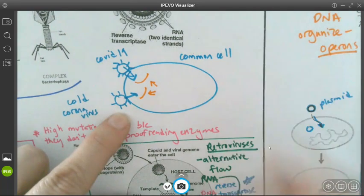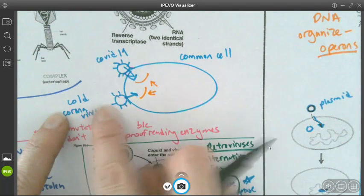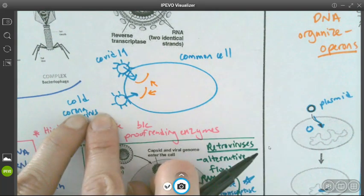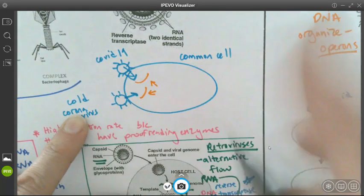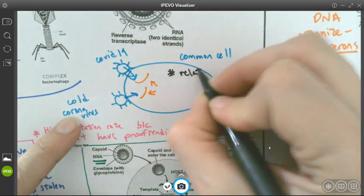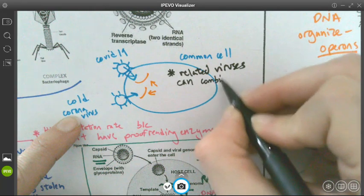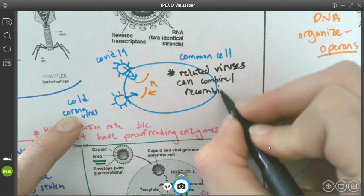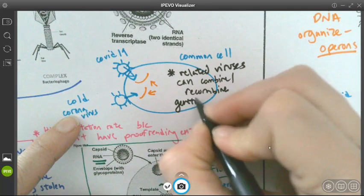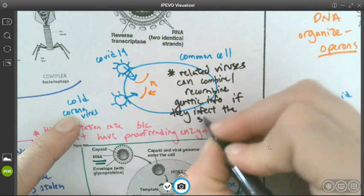And then actually we saw that happening with COVID and one of the cold viruses because COVID is a type of coronavirus and a lot of colds are caused by coronaviruses as well. And we saw an increase in transmissibility, but a decrease in pathogenicity because of these two combined genomes here. So just one last thing to note about viruses here. Related viruses can combine or recombine genetic info if they infect the same host cell.